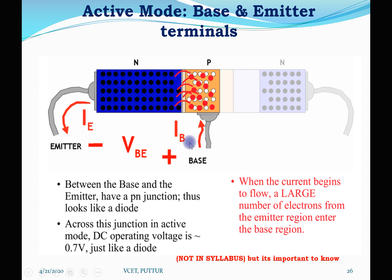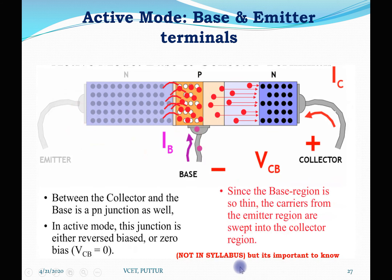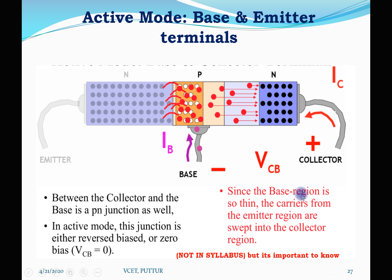When large current begins to flow, a large number of electrons from the emitter region enter the base region. Between the collector and the base there is also a P-N junction. In active mode, this junction is reverse biased, so the voltage across it is taken as 0. Since the base region is lightly doped and thin, the carriers from the emitter region are swept into the collector region. The large current flowing between the collector and emitter terminals is mainly controlled by the base-emitter voltage.